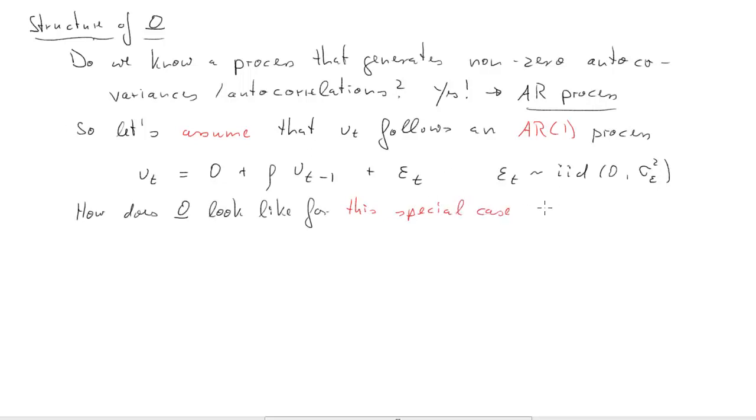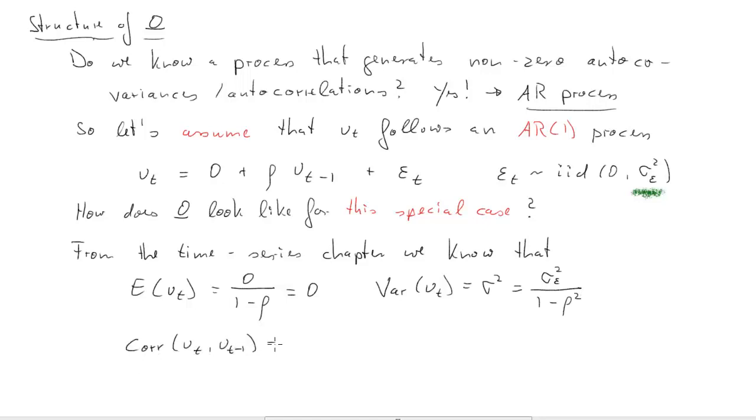Now, how does that omega look like for this special case? From the time series chapter, we know that if we have our AR1 process, the expected value for ut is 0, constant divided by 1 minus rho, and the variance, let's label that sigma squared, that's the variance for U. The variance for U is the variance of epsilon divided by 1 minus rho squared, the AR1 coefficient squared. You have also learned that the first order autocorrelation is just rho in an AR1. The second order autocorrelation is rho squared, and so forth.